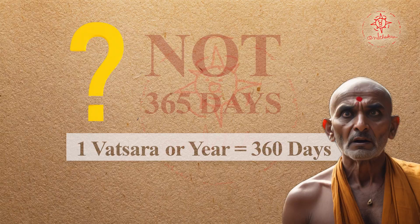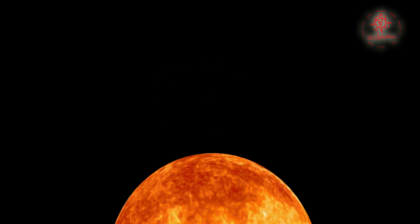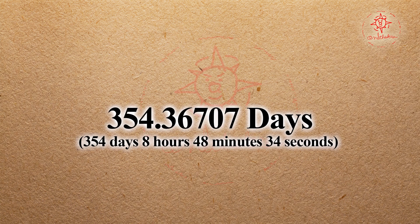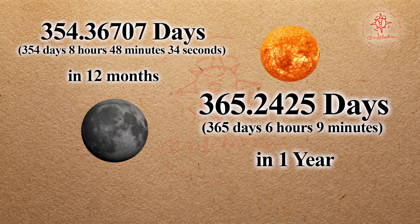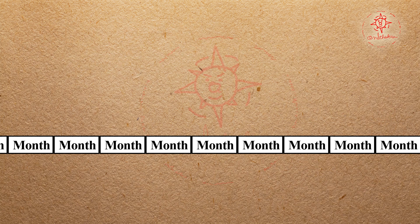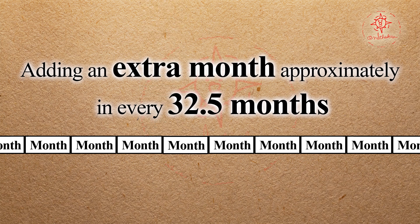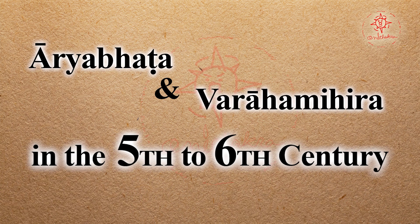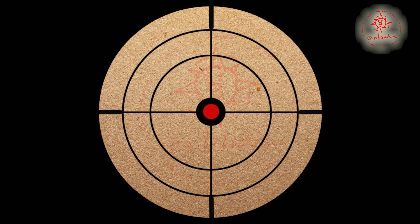You may ask: why this mismatch? These ancient Indian texts relied on the lunar cycle to define months and days, while the solar cycle determines the complete year. This posed the challenge of reconciling the approximately 354 lunar days in 12 months with the over 365 solar days in a year. To address this discrepancy, they developed various systems, the most prominent being the use of intercalary months — adding an extra month approximately every 32.5 months. These calendars were further refined during the Gupta era by Aryabhatta and Varahamihira in the 5th to 6th century. In this video, our focus is mainly on the Puranas, especially the Bhagavata Purana.